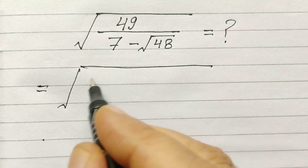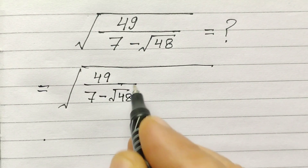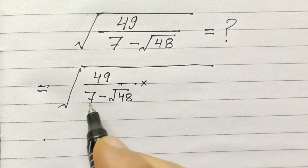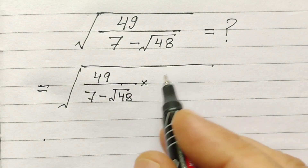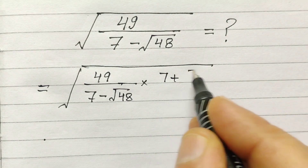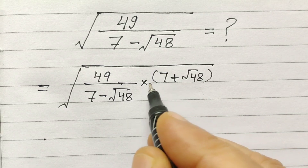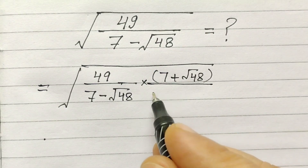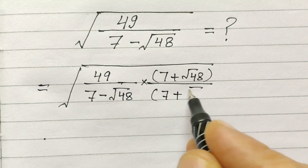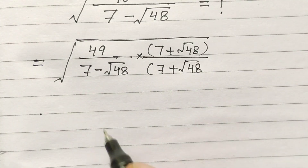Square root of 49 over 7 minus square root of 48 — if we multiply numerator and denominator by its conjugate, we get 7 plus square root of 48 over 7 plus square root of 48.